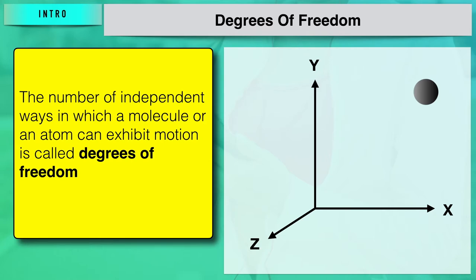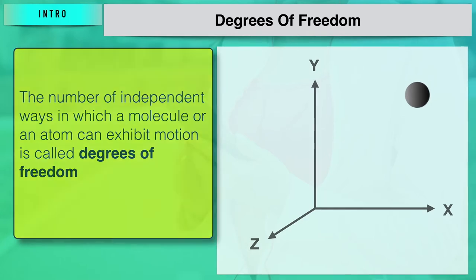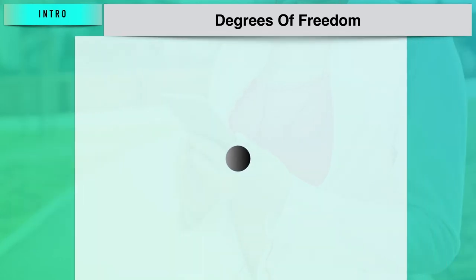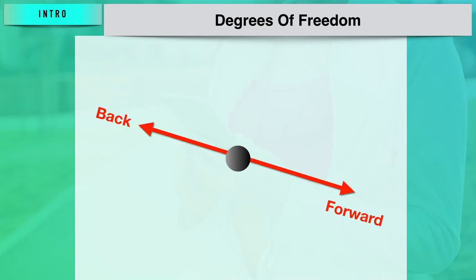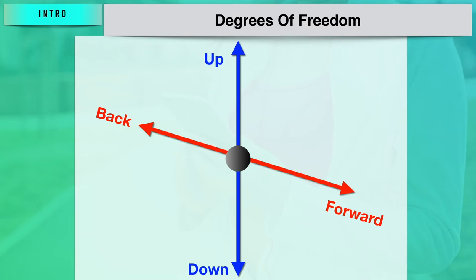Degrees of freedom refer to the freedom of movement of a rigid body in three-dimensional space. The body is free to move in forward-backward directions, upward-downward directions, and right and left. That means it can show translational motion in three perpendicular axes, combined with rotation about three perpendicular axes as well.